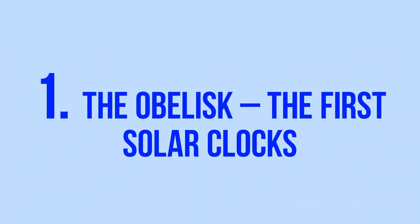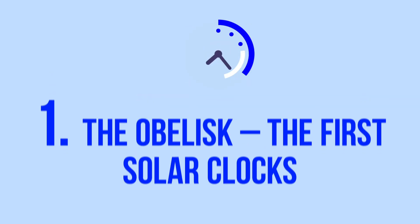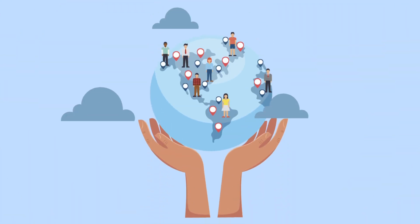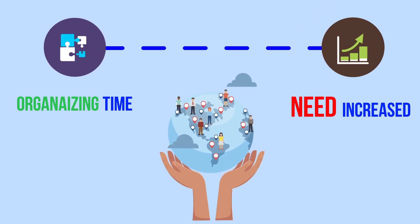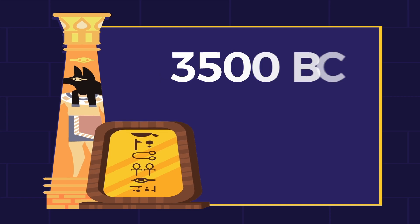The Obelisk - The first solar clocks. As human societies evolved, the need to organize time became increasingly apparent. This is where the pharaohs of ancient Egyptian civilization, around 3500 BC, played a pivotal role.